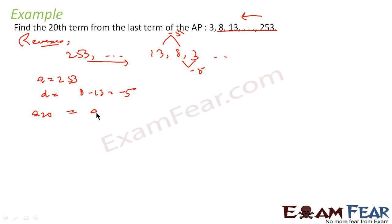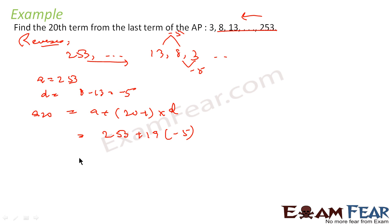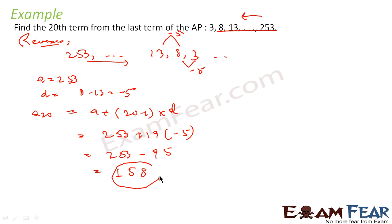A20 is nothing but a plus (20 minus 1) times d, that is a plus 19d. I put the values: 253 plus 19 times (minus 5), which gives 253 minus 95, and that is nothing but 158. So the 20th term from the last for this series is 158.